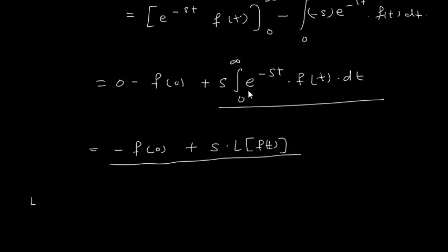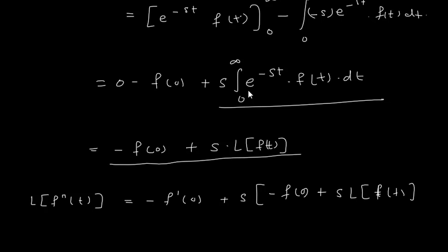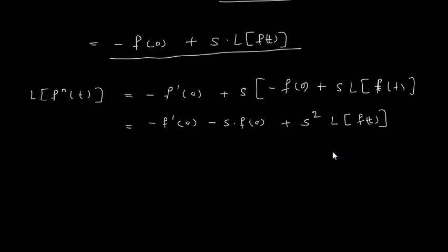If I extend this concept and find Laplace of f''(t) — double dash means I differentiate two times — here I apply the same formula treating f'(t) as the function. Substituting the earlier result for L{f'(t)}, which is minus f(0) plus s·L{f(t)}, and opening the bracket, I get: s²·L{f(t)} minus s·f(0) minus f'(0). This is the formula for the Laplace transform of the second derivative.